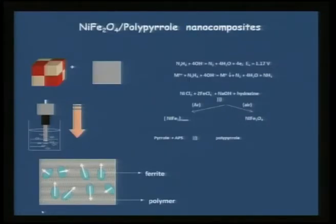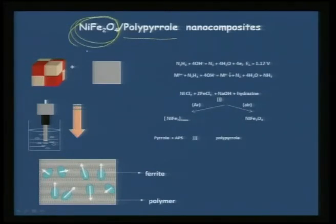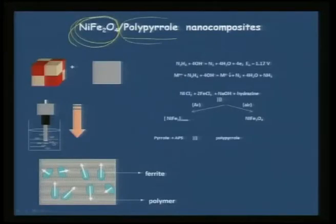Another example involves studying the electronic conductivity of oxide-polymer nano composites. Polypyrrole is a conducting medium, and coating nickel ferrite nano particles intrinsically with polypyrrole can affect conductivity. Nickel ferrite is ferromagnetic and used as a spin injection layer in magneto resistive devices, but it is an insulator. To observe magneto resistance effects, one can intrinsically coat nickel ferrite with polypyrrole.